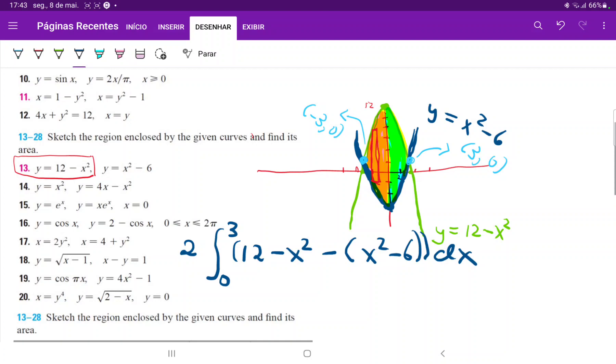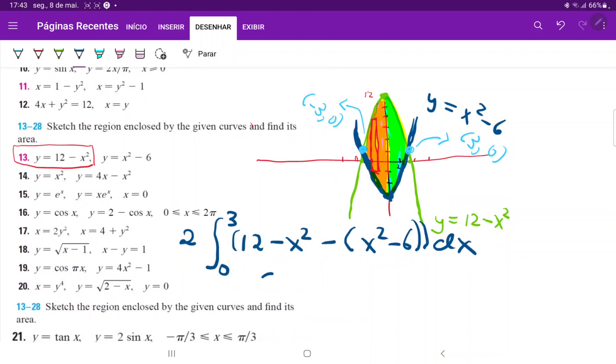So now we're just going to clean this up a little bit so that it's 2 times the integral from 0 to 3, minus x squared minus x squared. That gives us minus 2x squared. And then I have 12 minus minus 6. So that gives us plus 18 and all of this times dx.